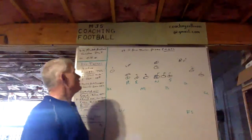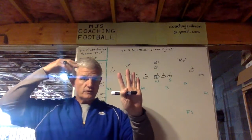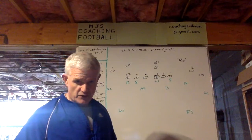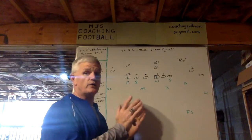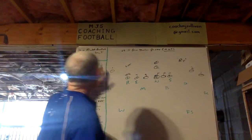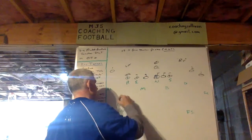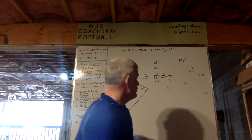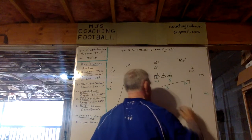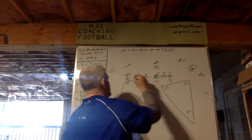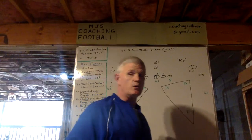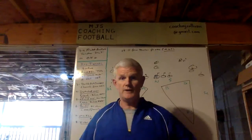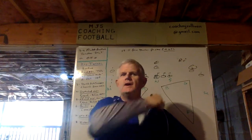Over in the diagram, let's clarify what Gray Three versus Gray Four means. Gray means we're in quarters; when we tag a number, it becomes match quarters. The number tells us how many defenders are reading and reacting off of number two. In Gray Three, it is the safety, outside linebacker, and inside linebacker on this side reading number two. In Gray Four, the corner is added as a fourth reader.